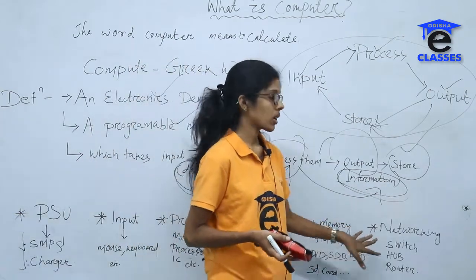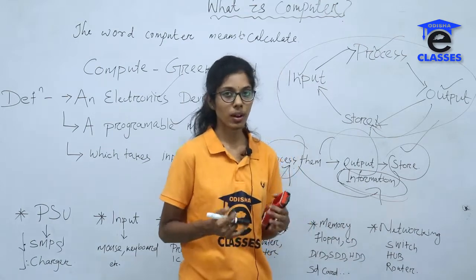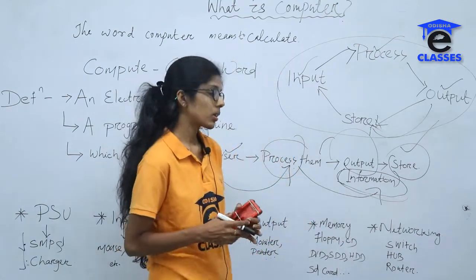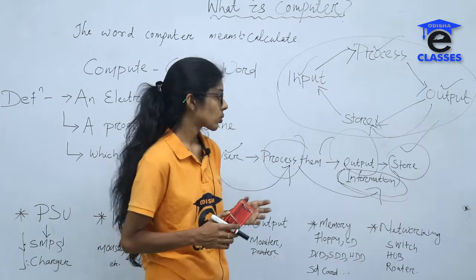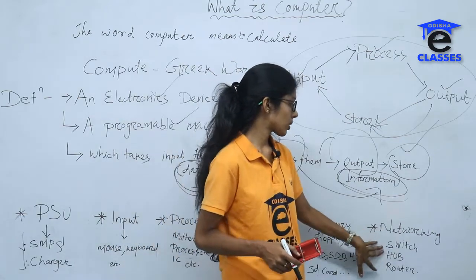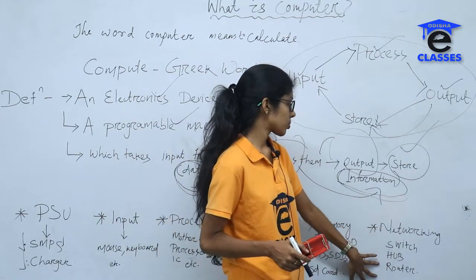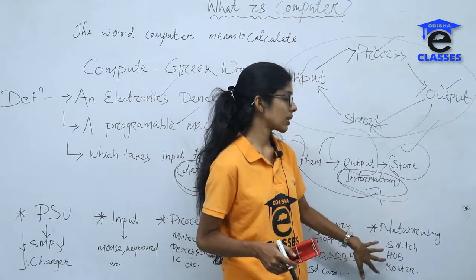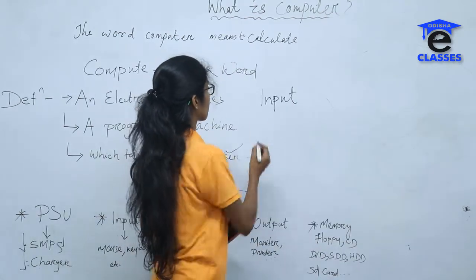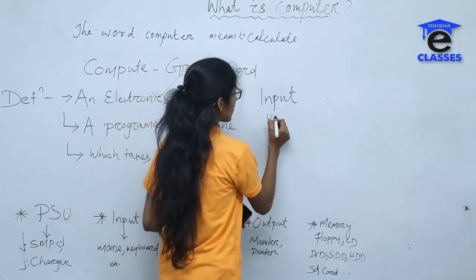Next is the networking unit. When we are using more than one computer, we need to connect them, and for that we need a network. Networking devices include switch, hub, and router. These are all networking devices.